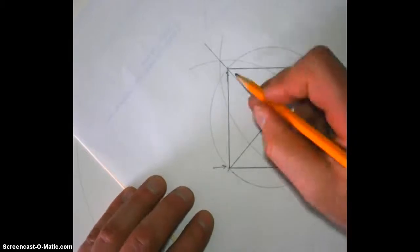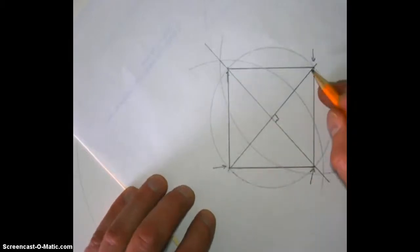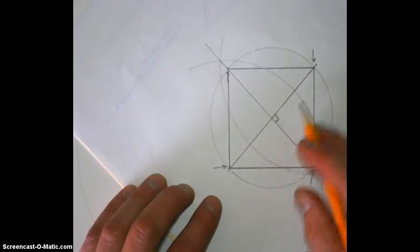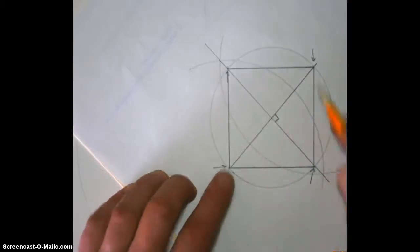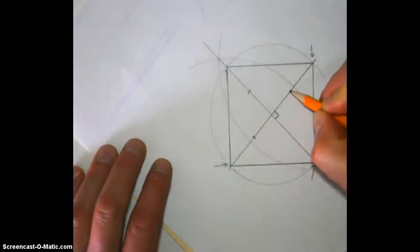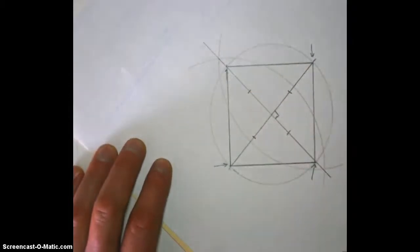We know that the diagonals are the same length because a square is a rectangle. And we also know that the diagonals bisect each other, cut each other in half. So since they're the same length and they cut each other in half, we know that that is the same as that, is the same as that, is the same as that.